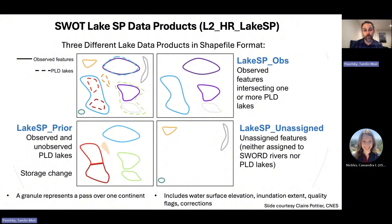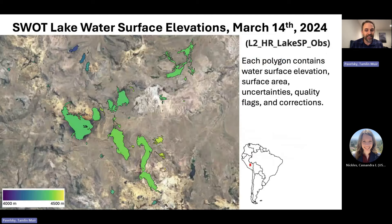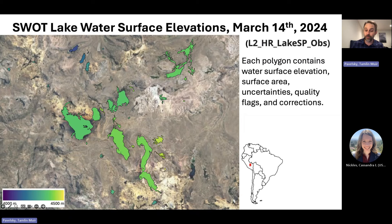Just like for rivers, one granule represents one pass over one continent. This data product also includes information on water surface elevation, inundation extent, quality flags, and corrections. Here's an example for some lakes in Peru high in the Andes — you can see polygons representing lake boundaries colored by the elevation of the lake. This is the observed product.